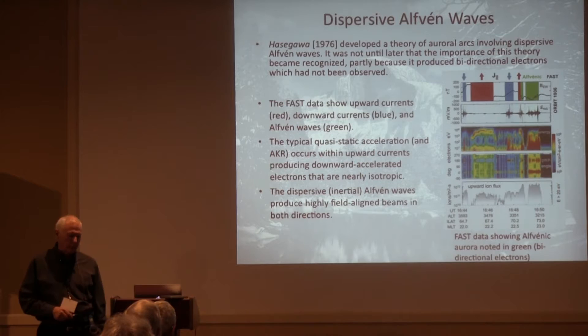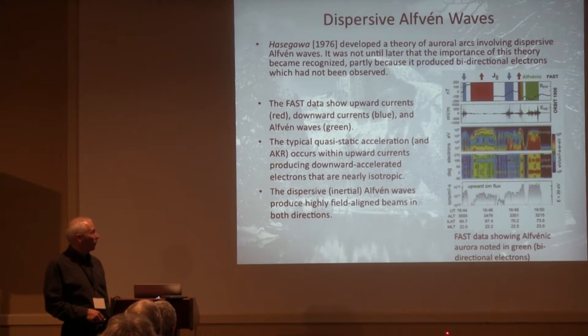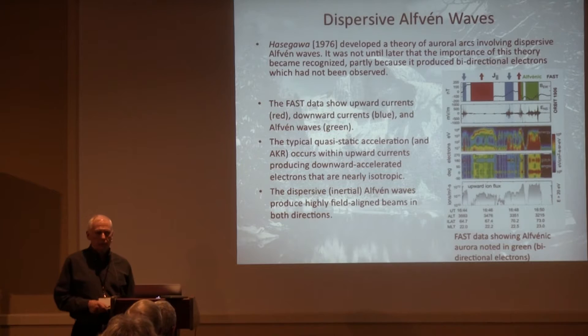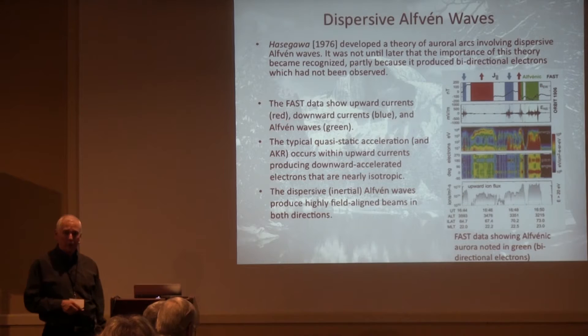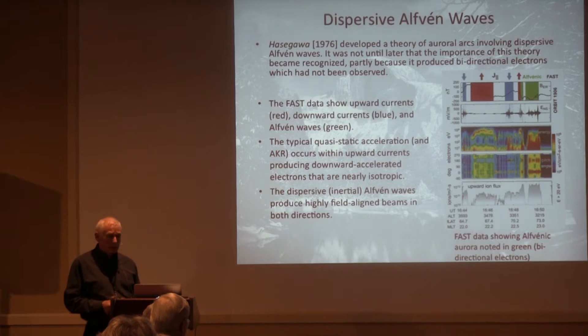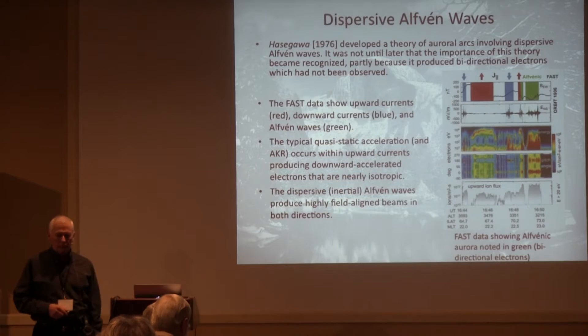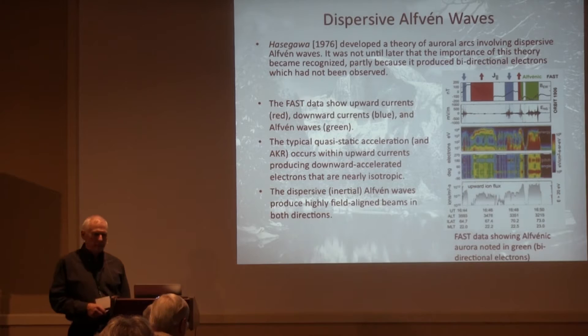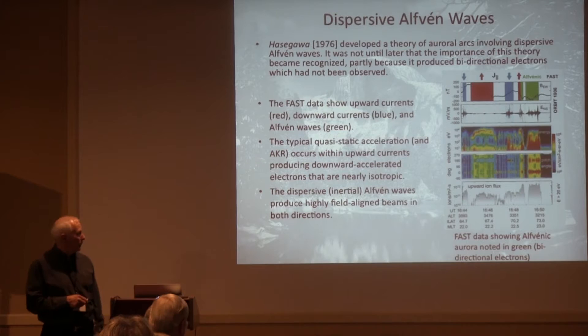Dispersive Alfvén waves — I mentioned them in connection with SAR arcs, but the first paper Hasegawa did there was in 1976, with a theory for production of auroral arcs by dispersive Alfvén waves. He was talking about kinetic Alfvén waves, but I've learned from Bill Lotko that actually in the auroral region it's inertial Alfvén waves. These Alfvén waves dissipate in the topside ionosphere and produce parallel electric field components — oscillatory, so it would predict electron beams going both upward and downward. But we knew that wasn't happening — they were all coming downward. I think that's why people didn't latch on to this theory until there started to be measurements.